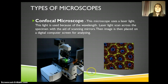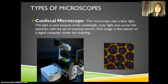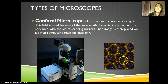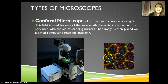We could also use a confocal microscope. We don't have one, but it's also a light microscope — only this time it uses laser light, some mirrors, and computers to help with it. Often these images are colored in by the computer, so if you see an image that's got color like this, it's most likely taken through a confocal microscope.